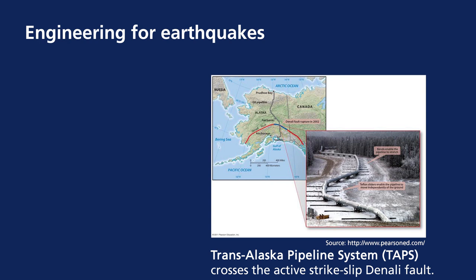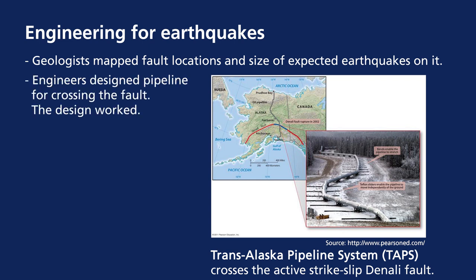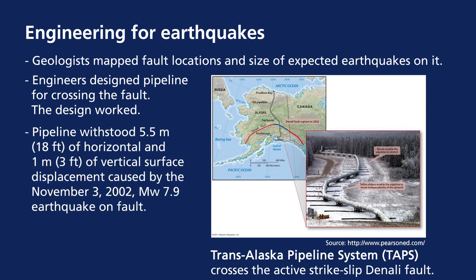We have had some engineering successes along known faults. An example is the Trans-Alaska Pipeline, where geologists mapped the fault location and size of expected earthquakes. Engineers designed a system somewhat like a rail system to absorb seismic waves, so the pipeline withstood a 5.5-meter horizontal displacement as well as a 1-meter vertical displacement in a large 7.9-magnitude earthquake on November 3rd, 2002.